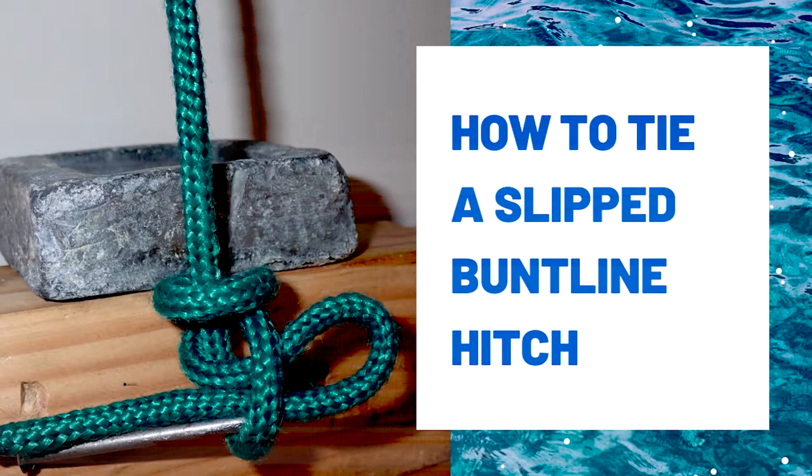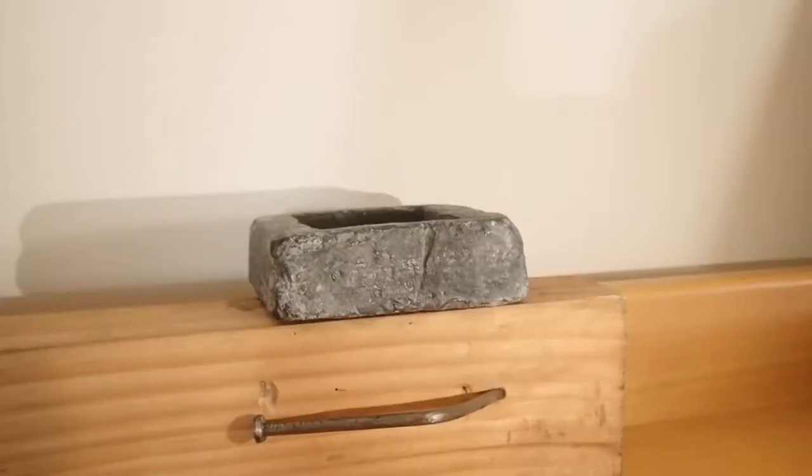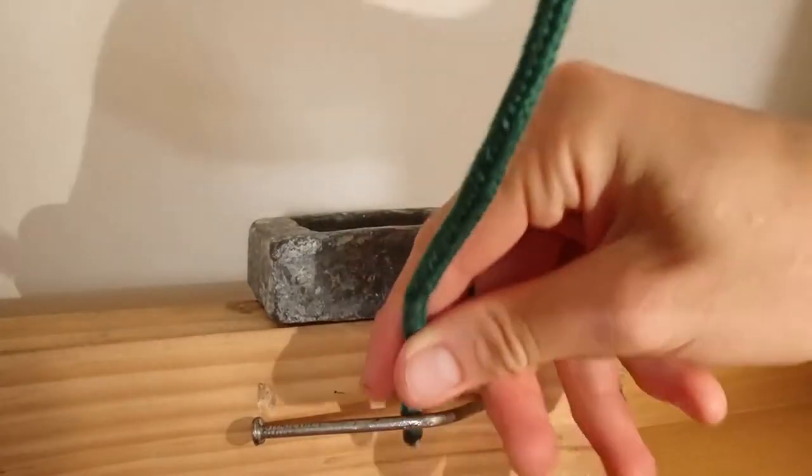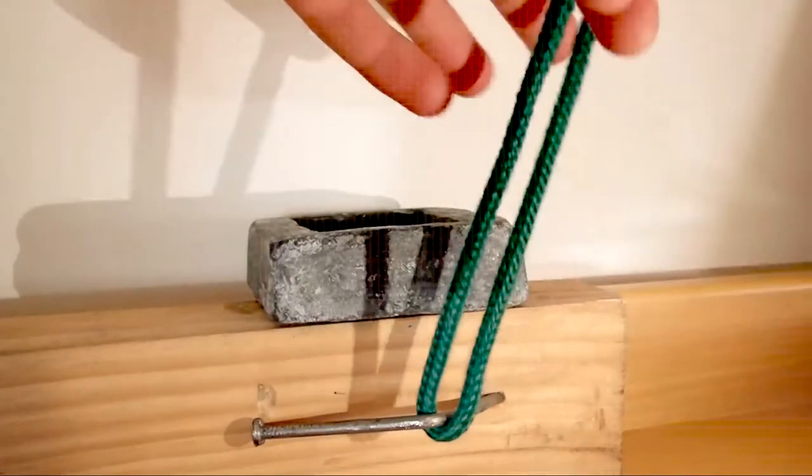How to Tie the Slipped Bunt Line Hitch. First, pass the standing end of the rope through the ring and pull enough length through to be able to secure the knot properly.